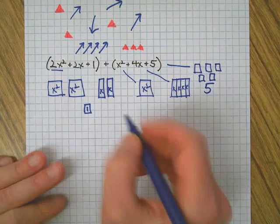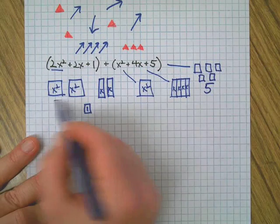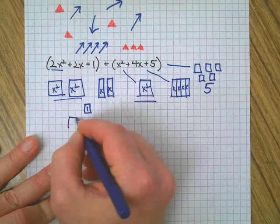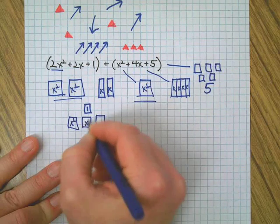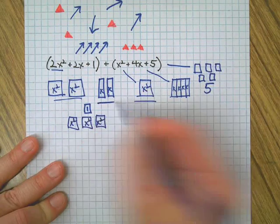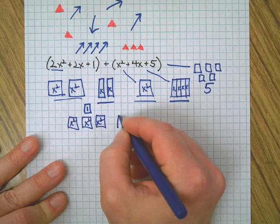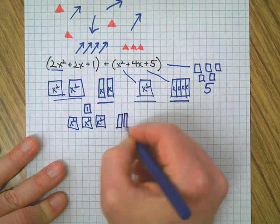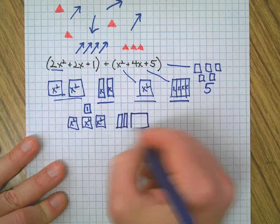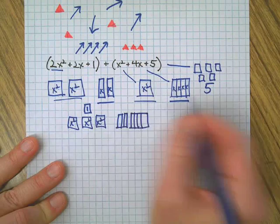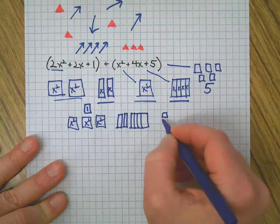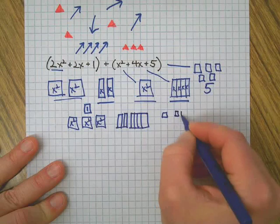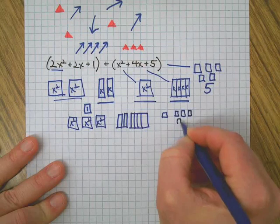So, combine like terms means I'm going to put all these together. Put all the x squares together. I'm going to put all the x's together. I'm going to make a little group of four. And I'm going to put all the little ones together. There's the one. One, two, three, four, five.